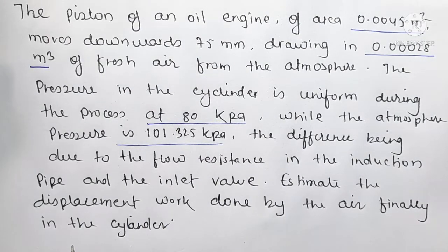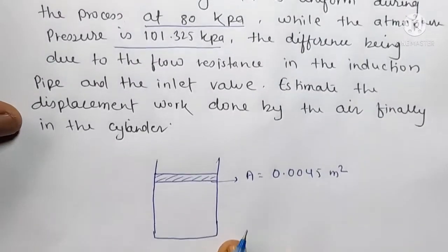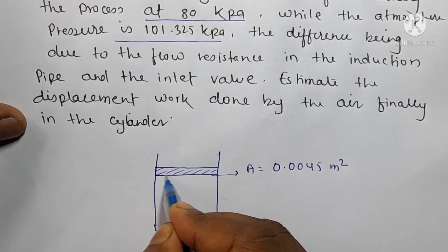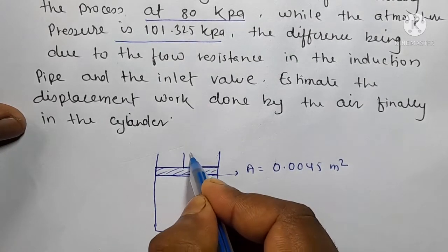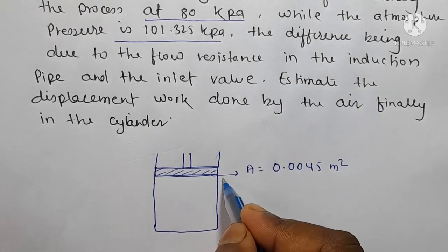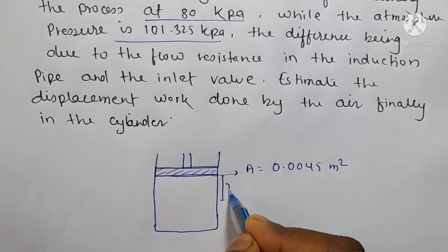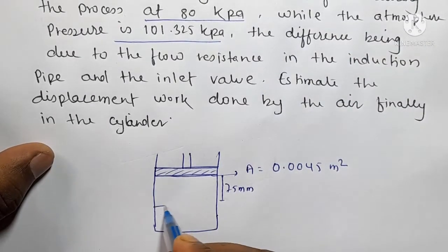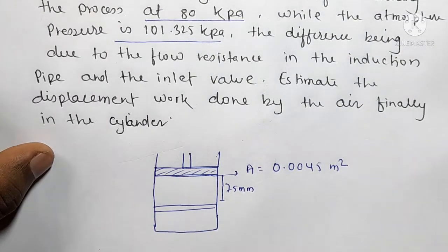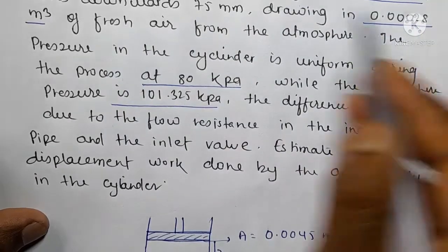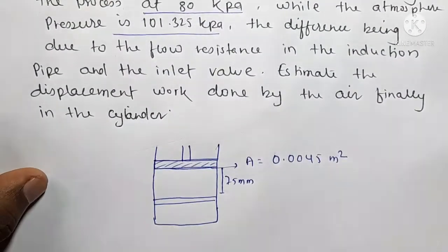We have a cylinder with a piston inside. The piston moves downwards 75 mm drawing in fresh air of 0.00028 meter cube from the atmosphere.